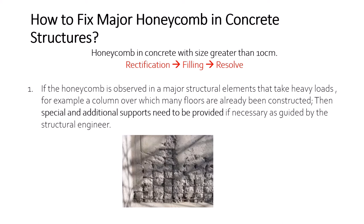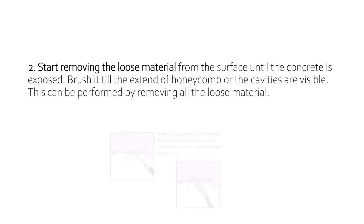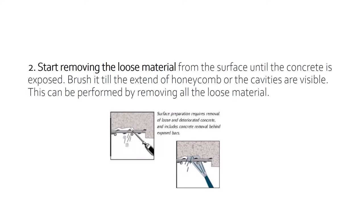When the size of honeycomb is very large, special attention and special repair methods have to be followed, unlike minor honeycombs. The process initially starts with rectification, followed by filling and resolving the honeycombs observed. If the honeycomb is observed in a major structural element that takes heavy loads — like columns or shear walls — you need special care and must provide special supports to that particular structure before any rectification. We start by removing loose materials observed on the honeycomb formation until the concrete is clearly exposed.